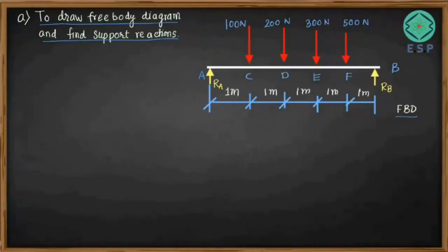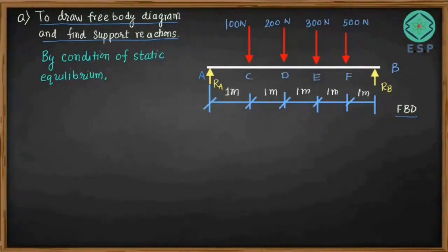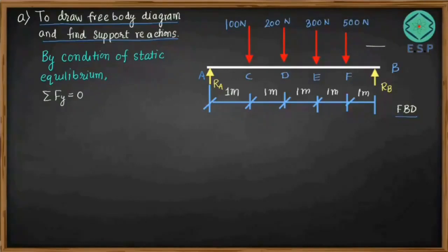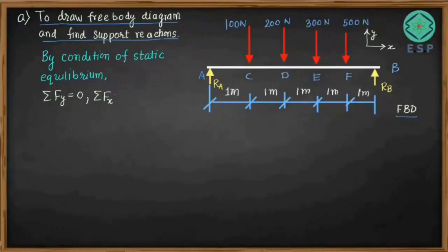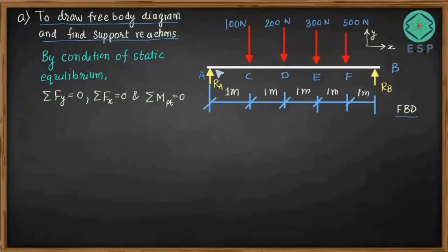Support reactions can be found by using the conditions of static equilibrium. The conditions are: summation of forces in the vertical direction (ΣFy = 0), summation of forces in the horizontal direction (ΣFx = 0), and summation of moments of forces about any point on the beam equal to zero. We are considering horizontal direction as X and vertical direction as Y. For simplicity, we will consider moment about point A or point B.